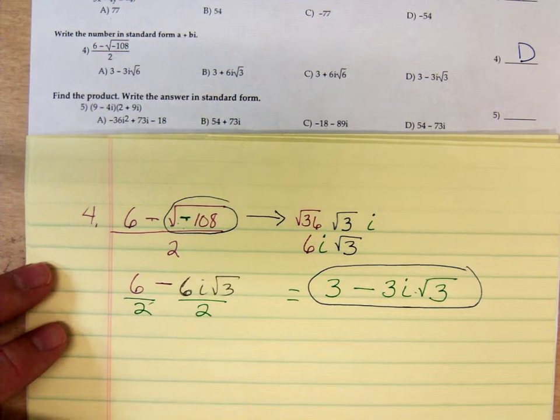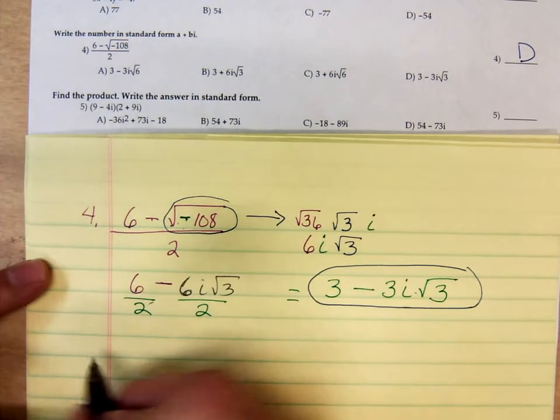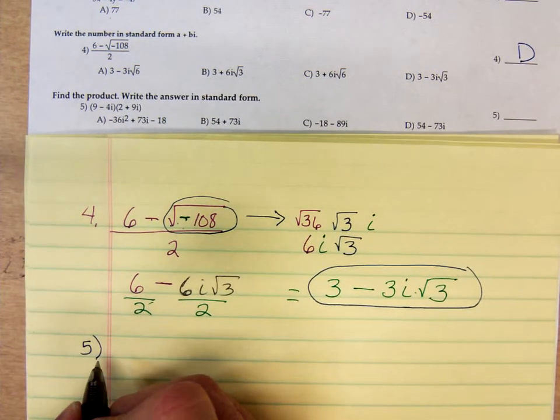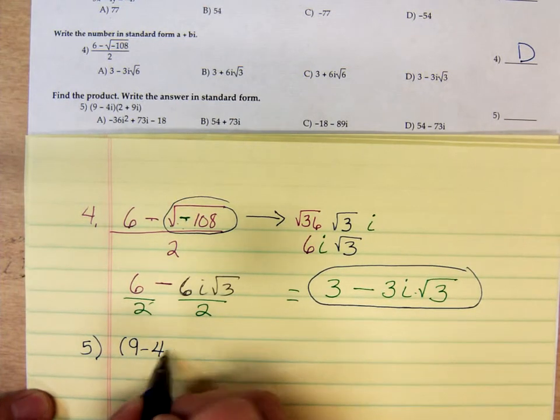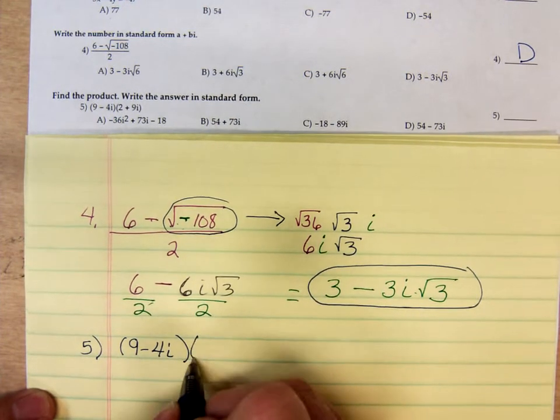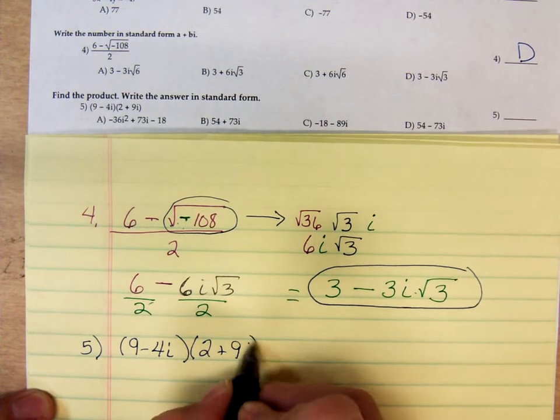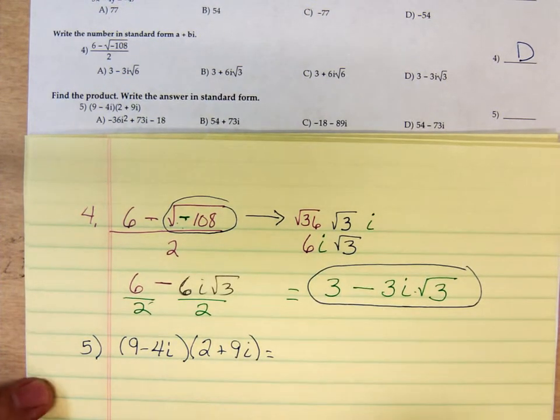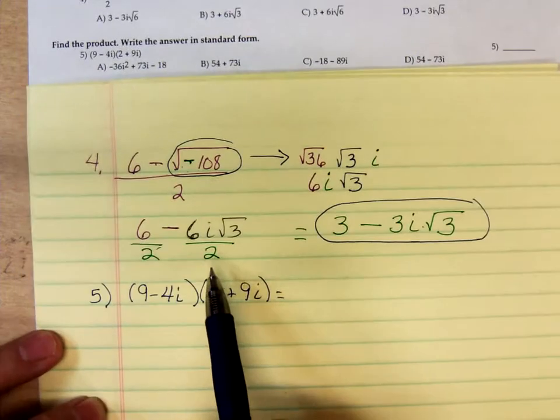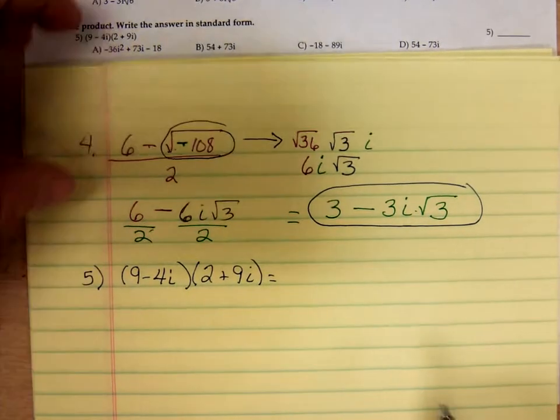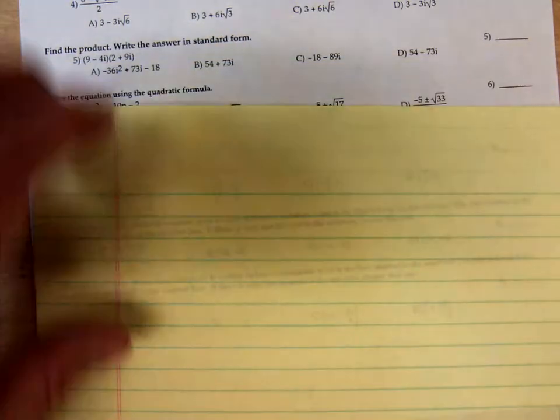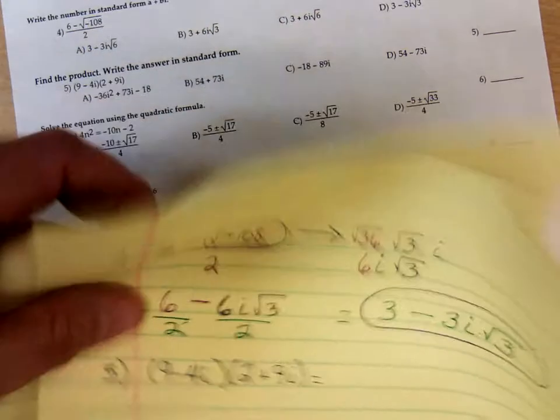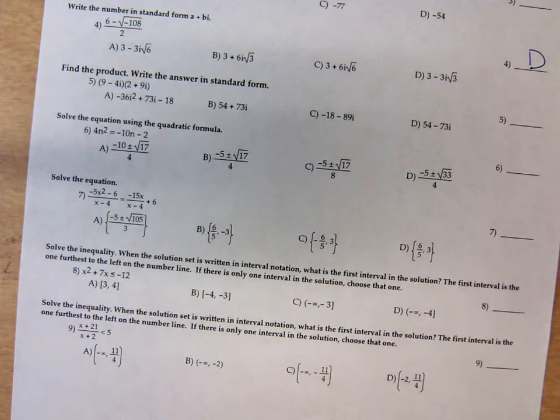Now, problem number 5. Find this product. 9 minus 4i times 2 plus 9i. Here we're multiplying complex numbers. And in order to multiply complex numbers, we're just going to foil it out.